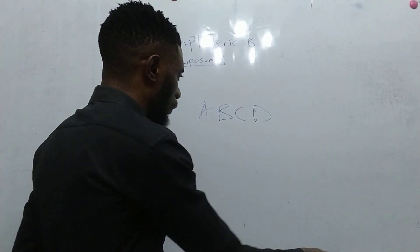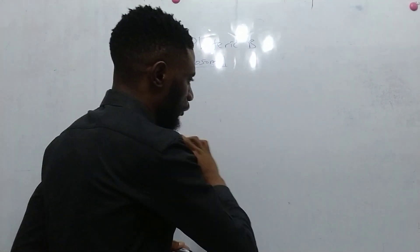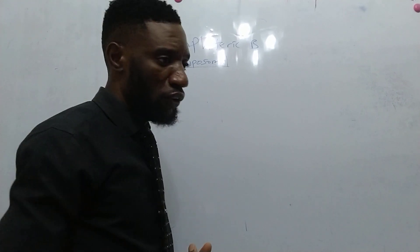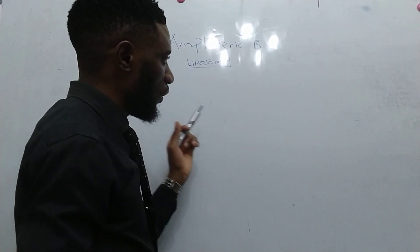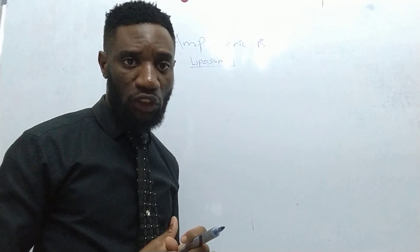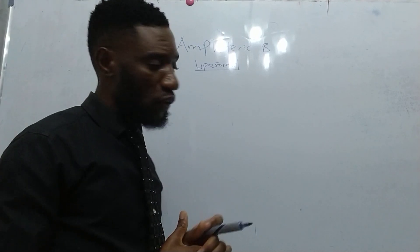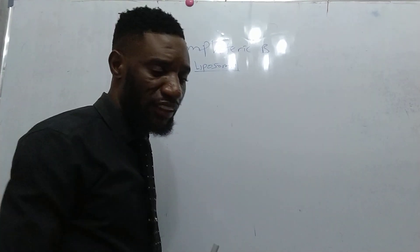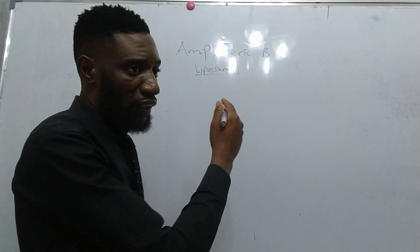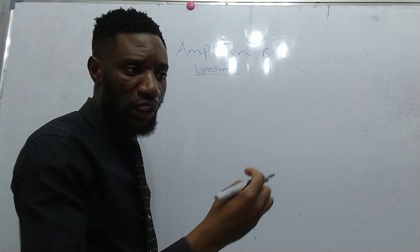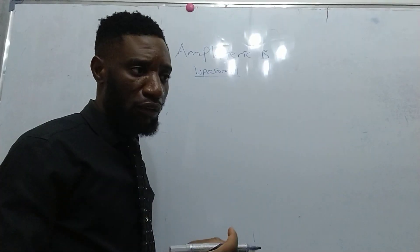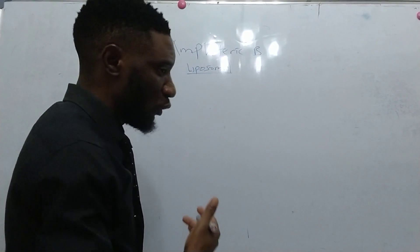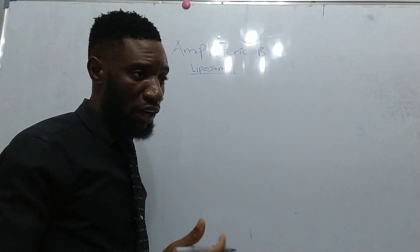Today I'm going to talk about how to reconstitute liposomal amphotericin B, sometimes branded as AmBisome. The lipid formulations are less potent compared to deoxycholate. Amphotericin B is a very broad antifungal from the polyene class. It covers multiple fungal species including yeasts, dimorphic fungi, and Candida species.